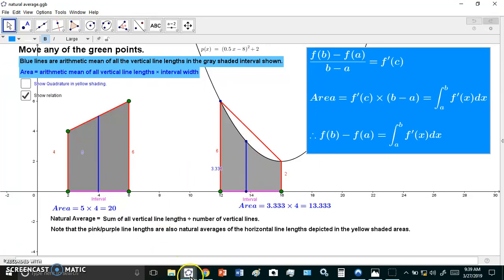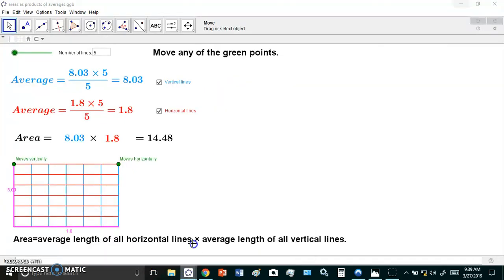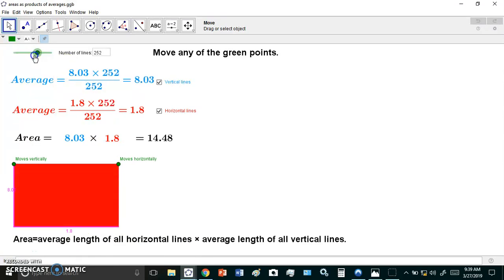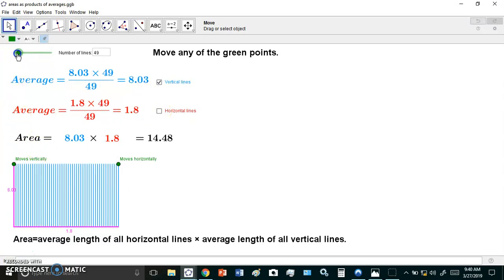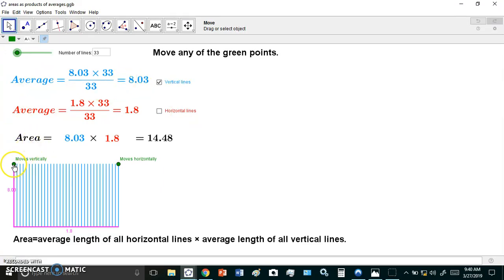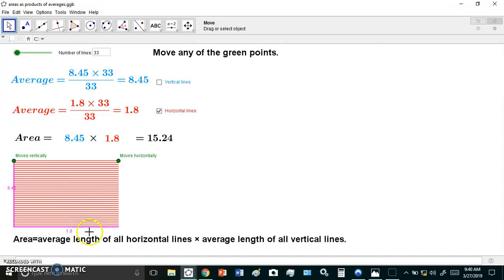So it means that all the vertical line lengths in this interval actually have an arithmetic mean. And it happens to be this blue line. And of course, the reason for that is that area is really just the product of the arithmetic mean of the horizontal lines and the vertical lines. So it doesn't matter how many of those you have, the arithmetic means remain unchanged. So if you just have vertical lines, see that? The arithmetic mean is always this number here. So this length here is the arithmetic mean of all the vertical lines. And this length here is the arithmetic mean of all the horizontal lines.